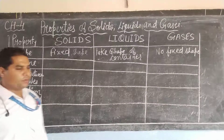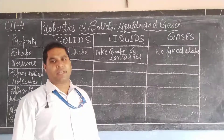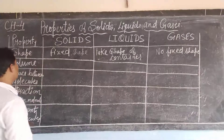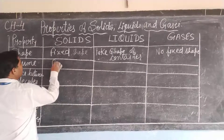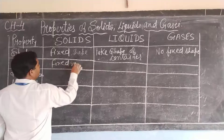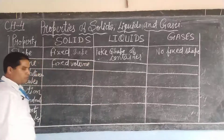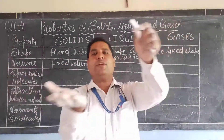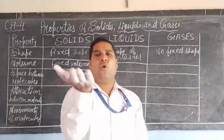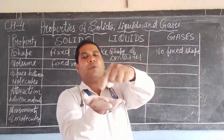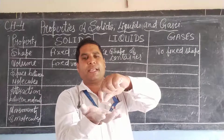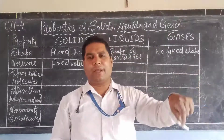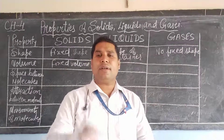Next property: volume. What do you mean by volume? Volume is the space occupied by a body. So solid has a fixed volume. For example, this chalk — when you keep it on your palm it will occupy a certain space. That same space will be occupied whether you place it on the table, on the chair, on the floor, or on the bed. So solid has a fixed volume.